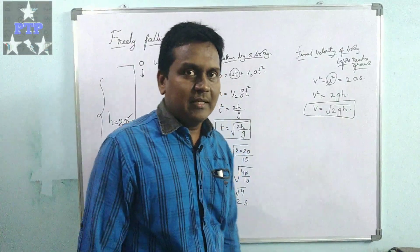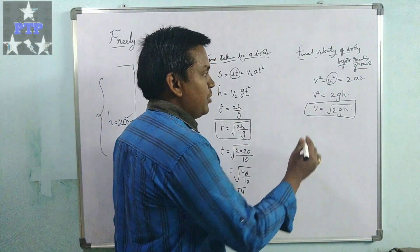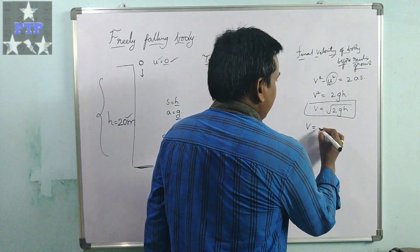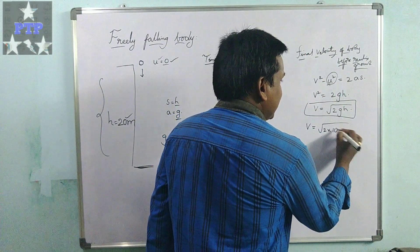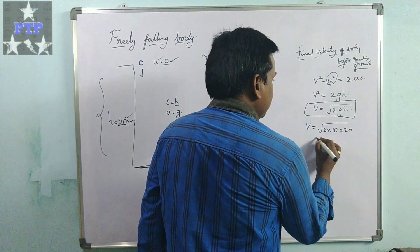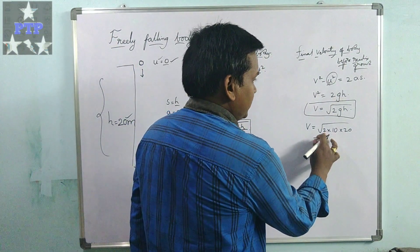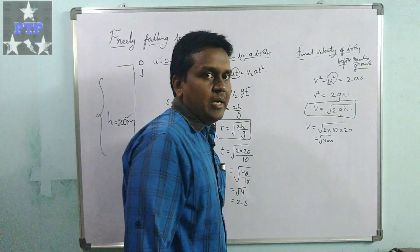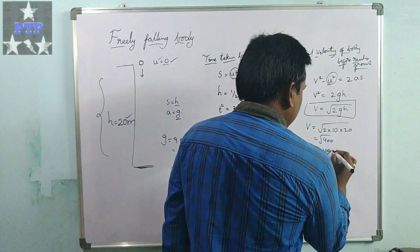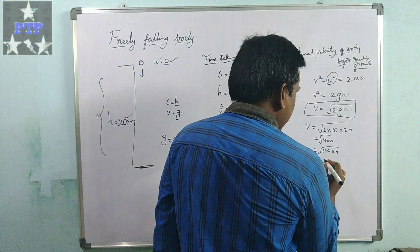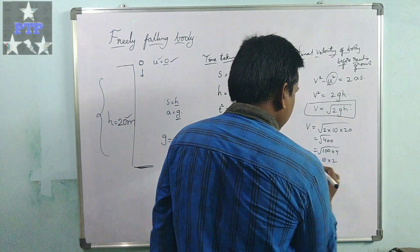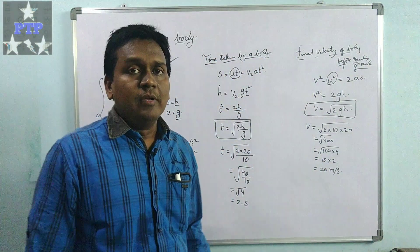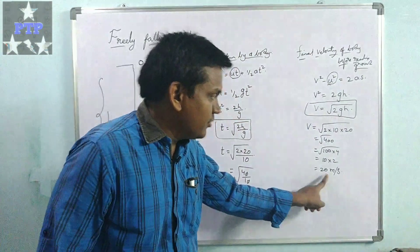In the same way, the final velocity of the body dropped from the 20-meter building is: v = √(2gh) = √(2×10×20) = √400. Now √400 = √(100×4) = 10×2 = 20 meters per second. So the final velocity of the body just before touching the ground is 20 meters per second.